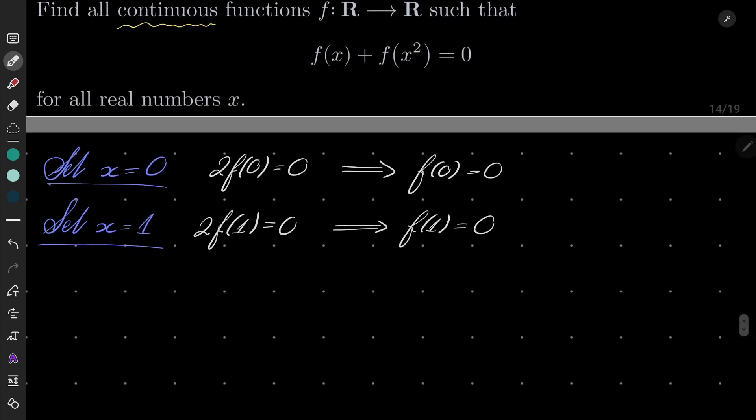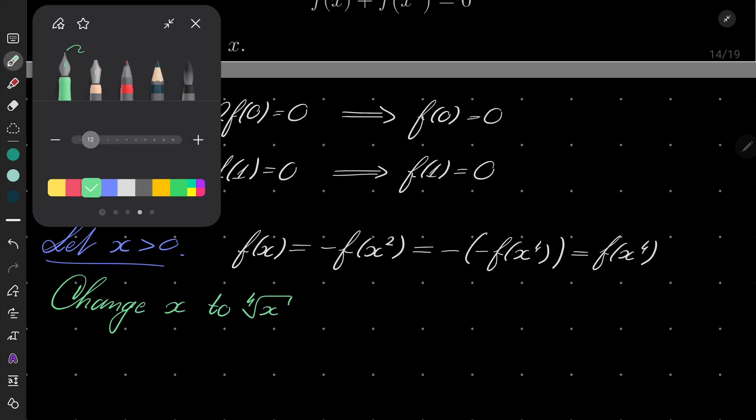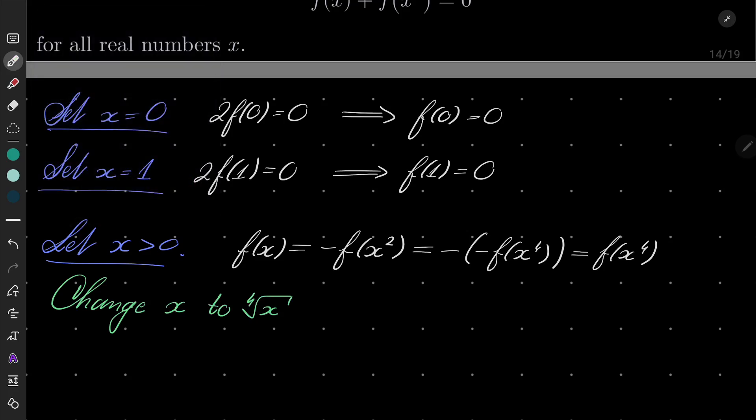And now let's take our functional equation. So now let x be a positive value and let's see the following. f of x equals minus f of x squared, but again by the very same functional equation, f of x squared is minus f of x to the fourth power, which is just f of x to the fourth power. Okay, that's something, and now let's do one trick, namely change x to root of degree 4 of x. It can be done because x is positive and this equality holds for every positive x.